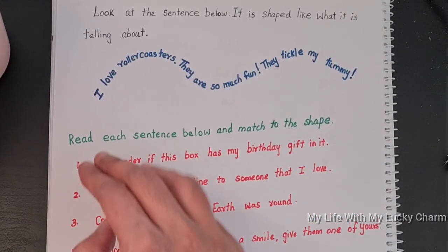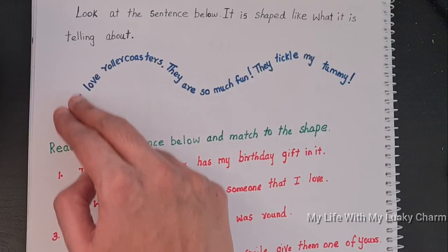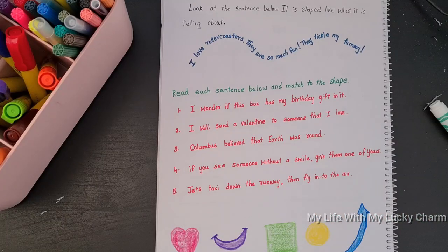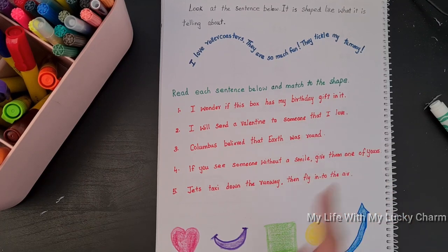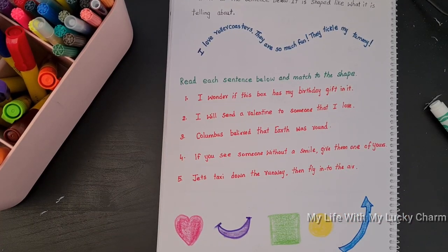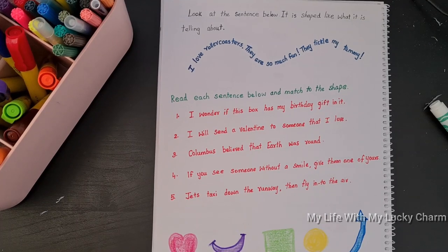So the sentence also is written in the way that how the roller coaster moves. So similarly, you just need to read the sentence given below and match it with the shapes. These activities really help when they are going to work with comprehensions.